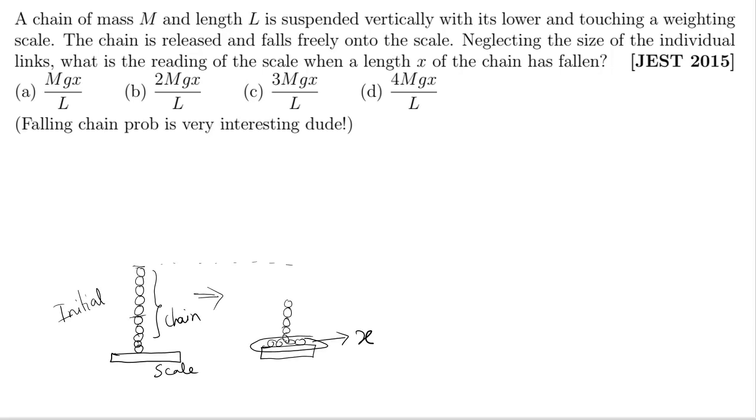So this is the scale, this is the chain. This x which was initially not lying on the scale was just hanging and was held by some support initially. Now this x has fallen here. Your initial guess will be that total mass is M and total length is L, so mass per unit length is M by L.